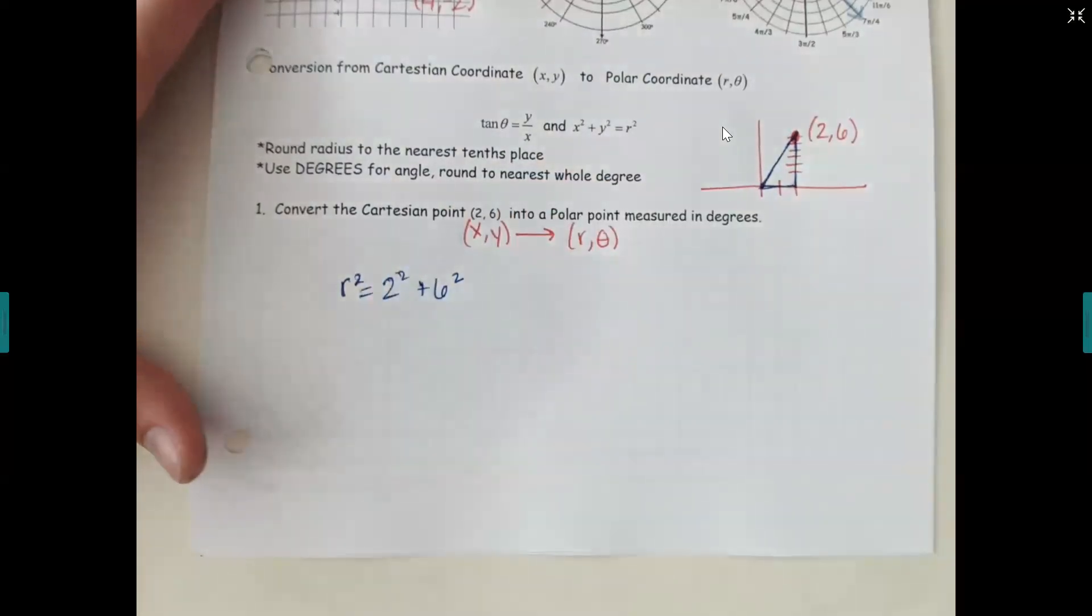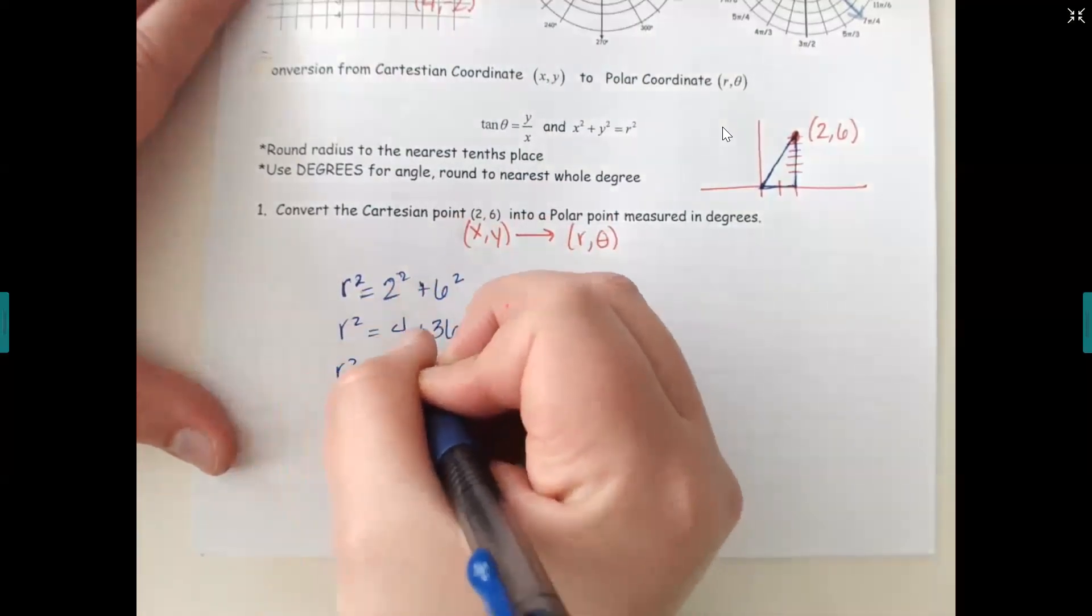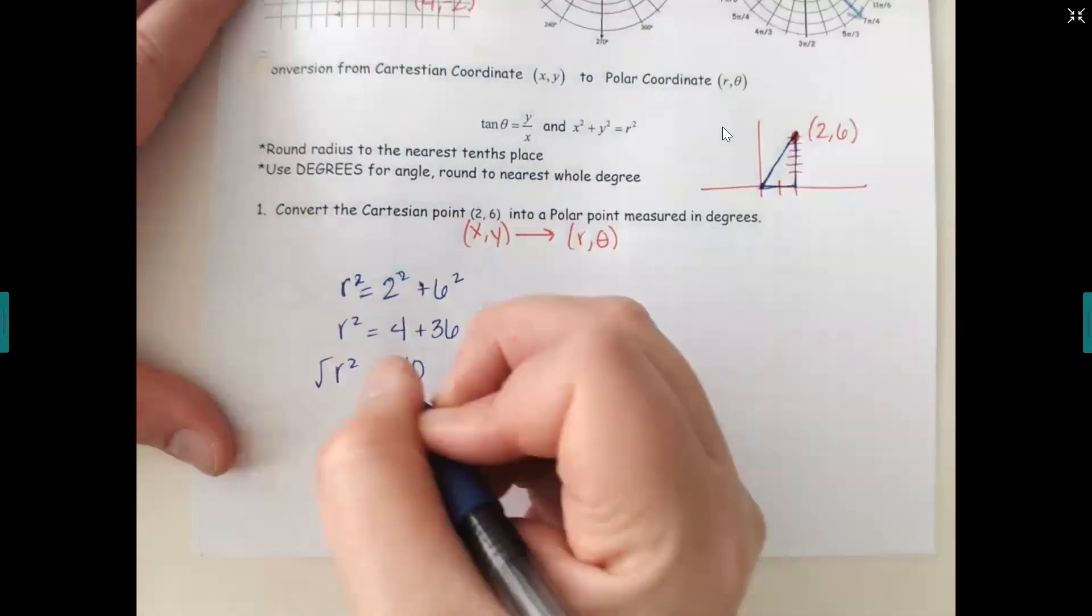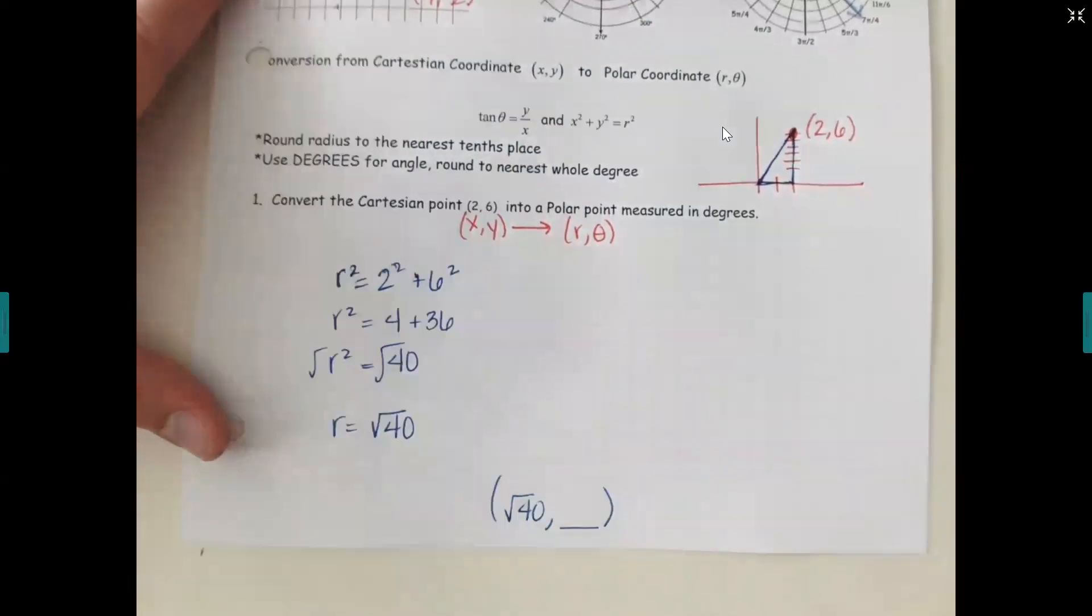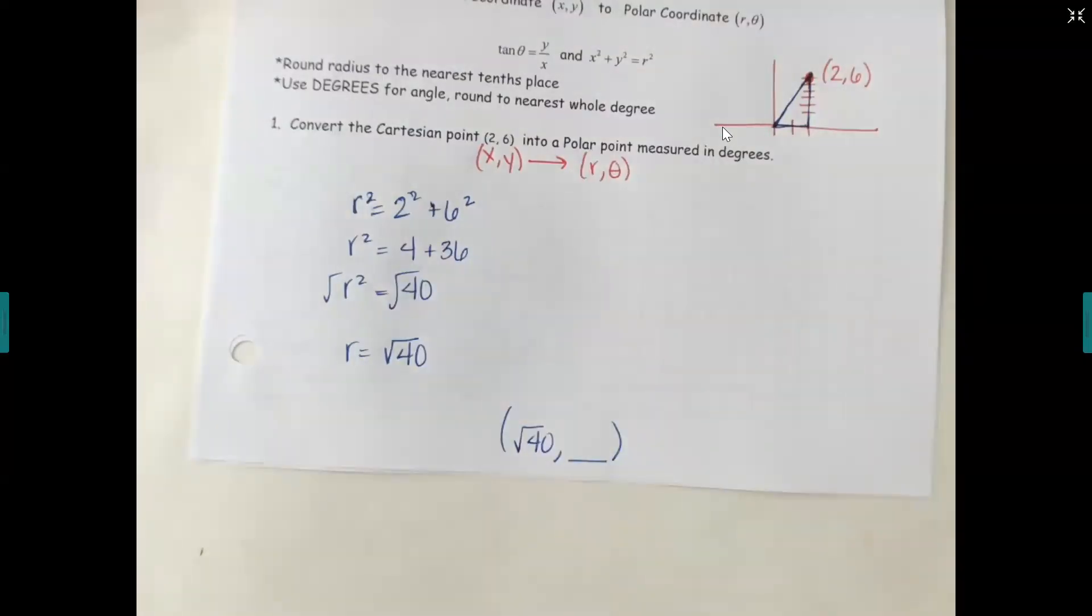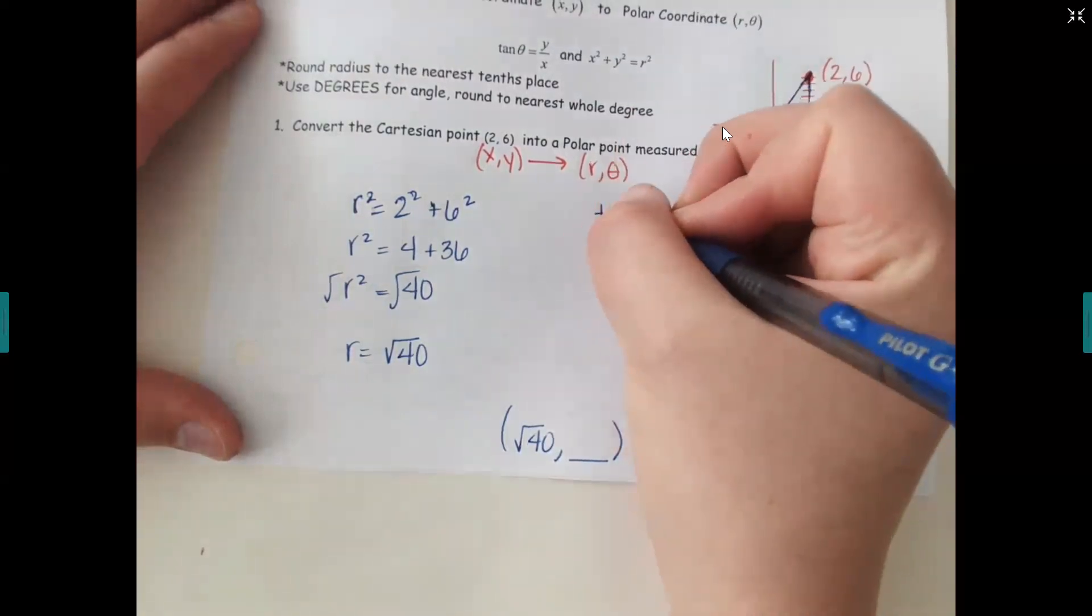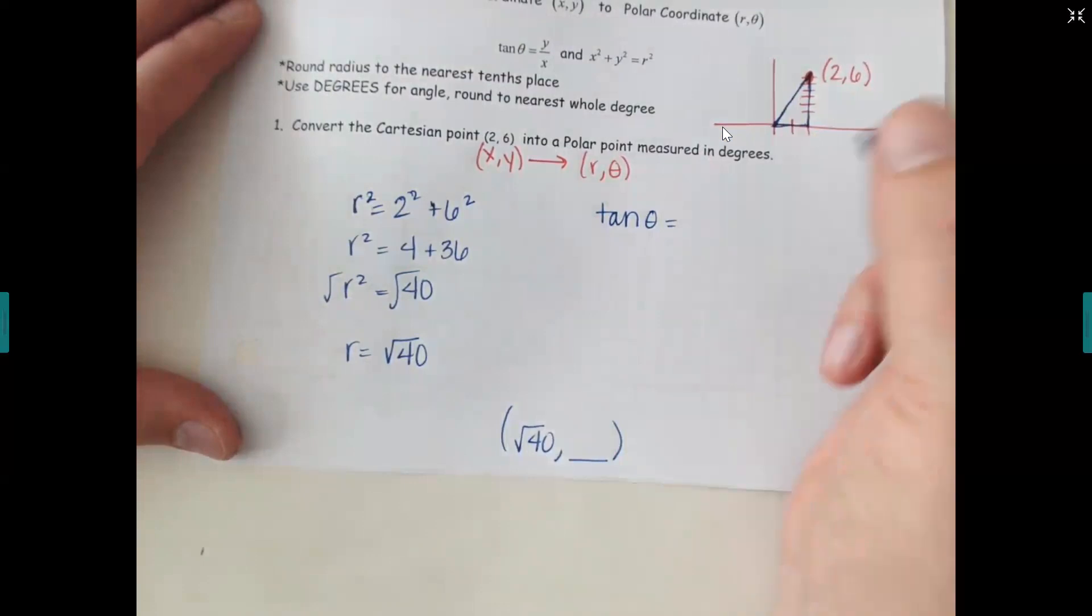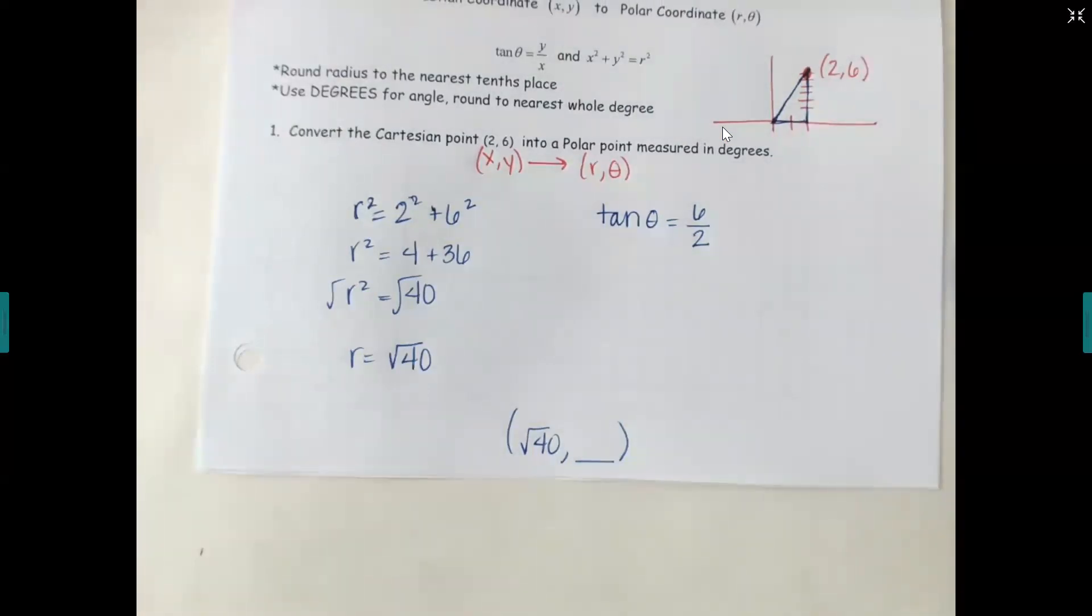How did we find how long this was? We did a squared plus b squared and then took the square root. It's the same formula. So you're going to do r squared equals 2 squared plus 6 squared. 2 squared is 4, 6 squared is 36. So what is 4 plus 36? 40. And if that's r squared, then how do I get to r? Take the square root. So my r is root 40.